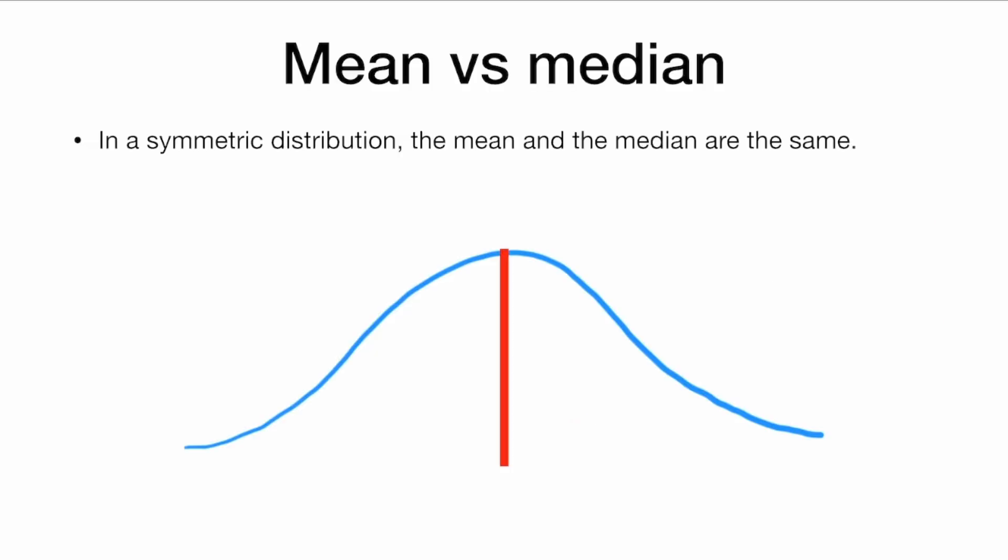Skewness has an effect on the mean and the median. So in a symmetric distribution, the mean and the median are the same. Here we have a normal distribution, and this value is both the mean and the median.